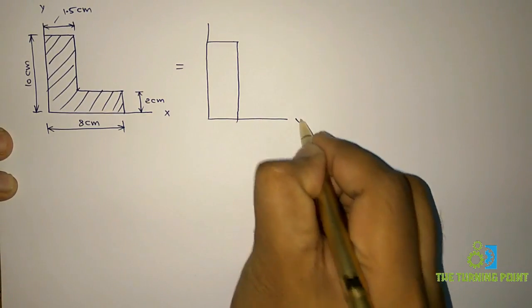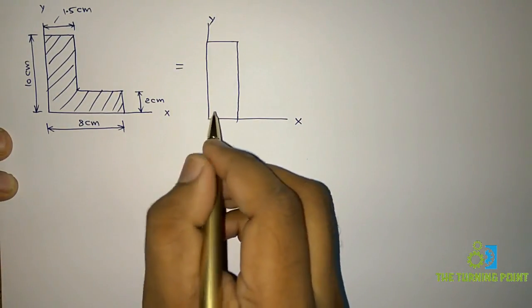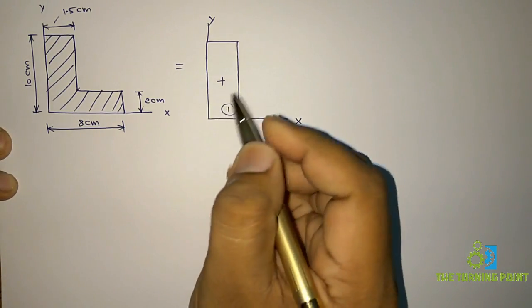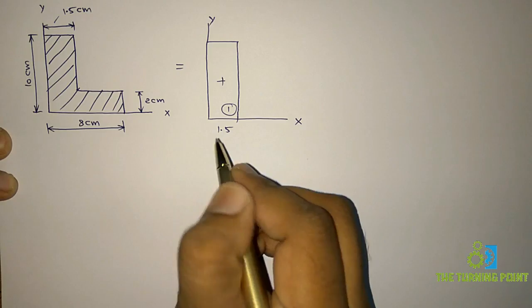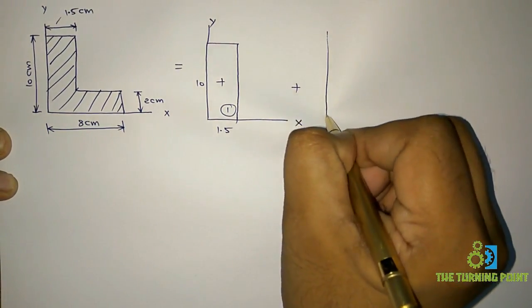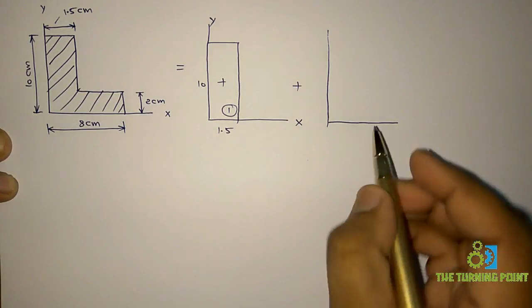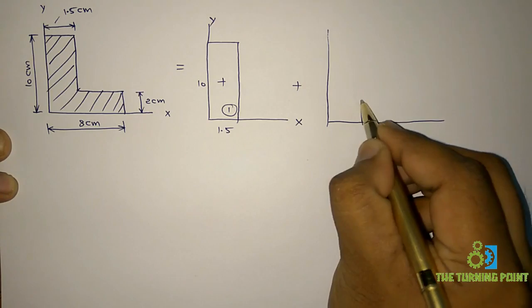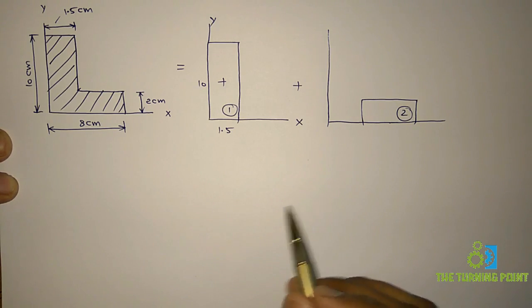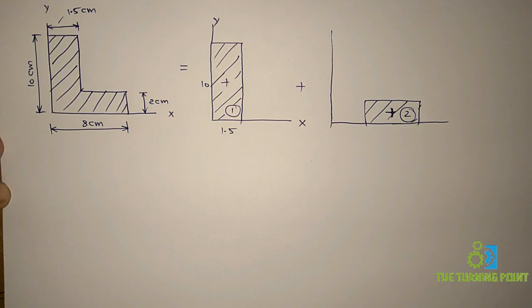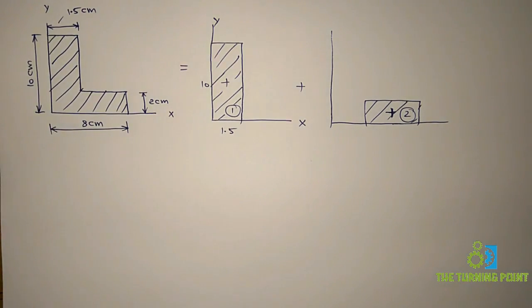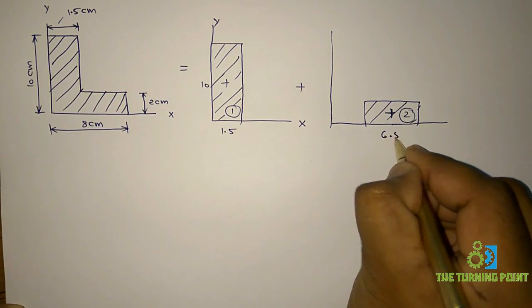This is the first rectangle with x-axis and y-axis. This is the centroid of this geometry. Base is 1.5 and height is 10 cm. Adding this rectangle to another rectangle gives the second geometry. So if I add these two I will get that shaded area. This dimension is 8 minus 1.5, which is 6.5, and this is 2.